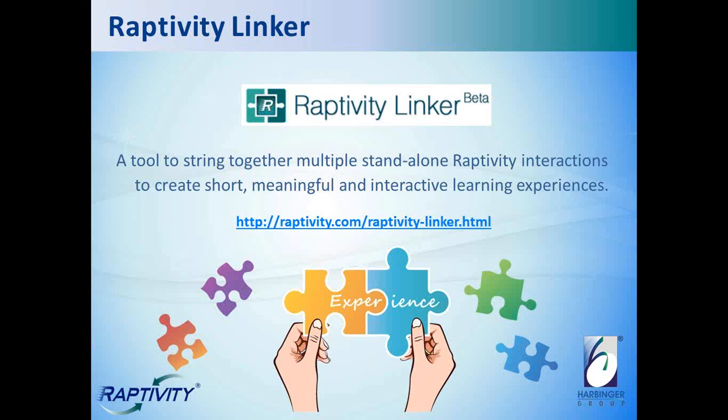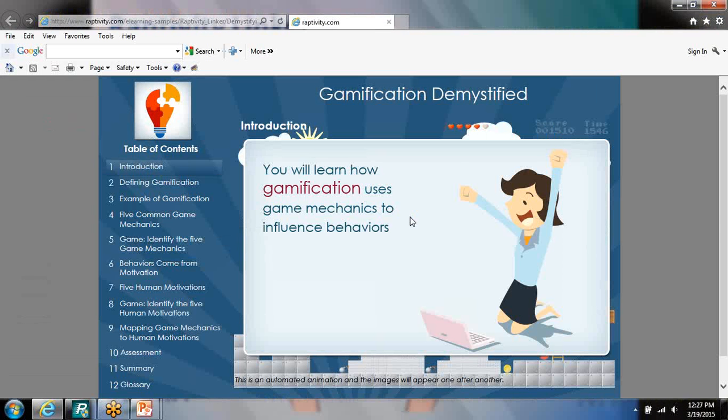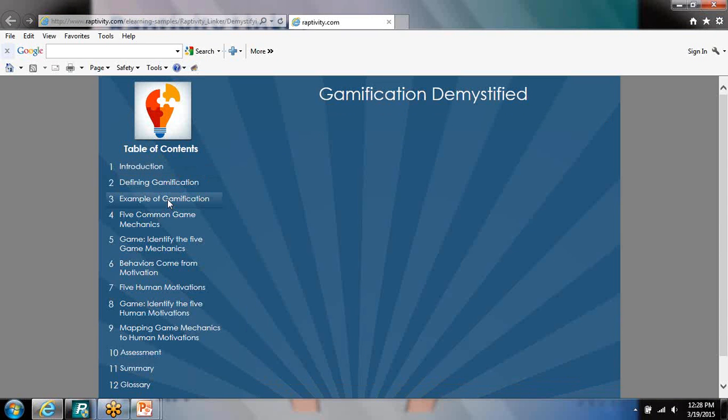So here we have our linker gamification sample. And you'll notice here on the left there are 12 sections or topics that make up this experience. And each of these is a Raptivity interaction. But you also can add slides with images and text. Now notice number three here. This is a character dialogue interaction where two people are conversing about this gamification topic.